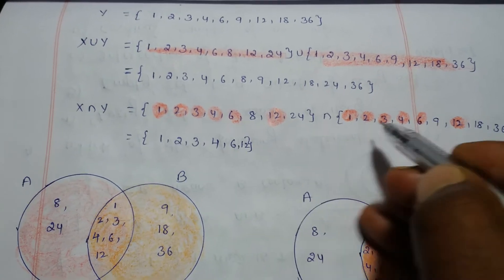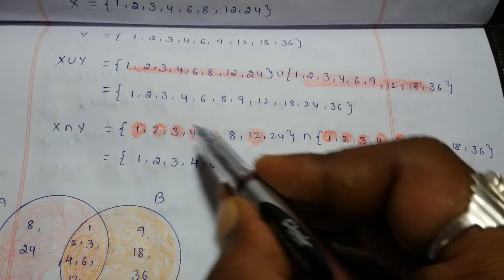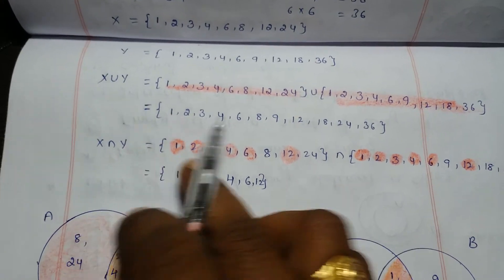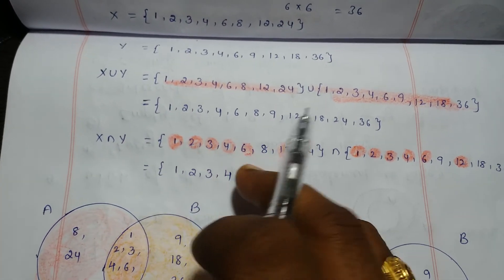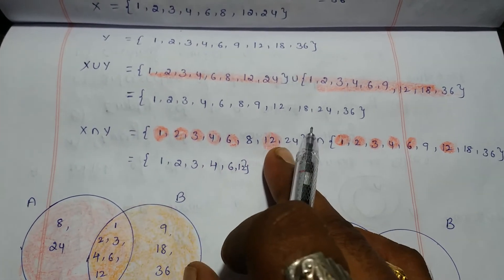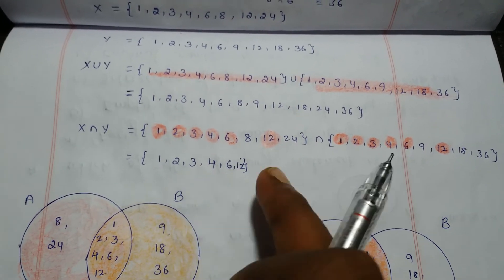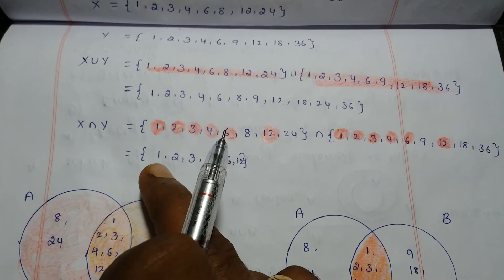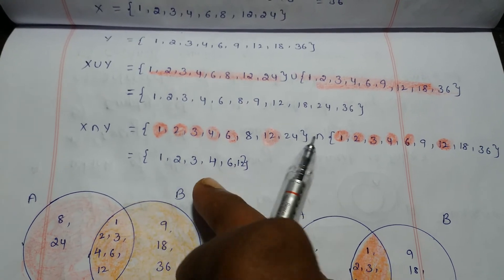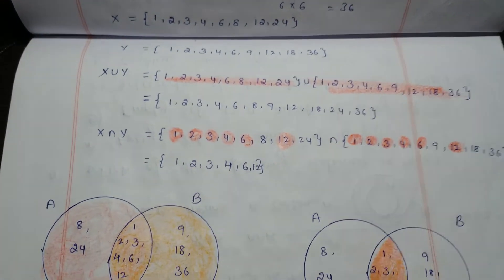X intersection Y is the set of common elements present in both sets. The common elements are 1, 2, 3, 4, 6, and 12. So X intersection Y = {1, 2, 3, 4, 6, 12}.